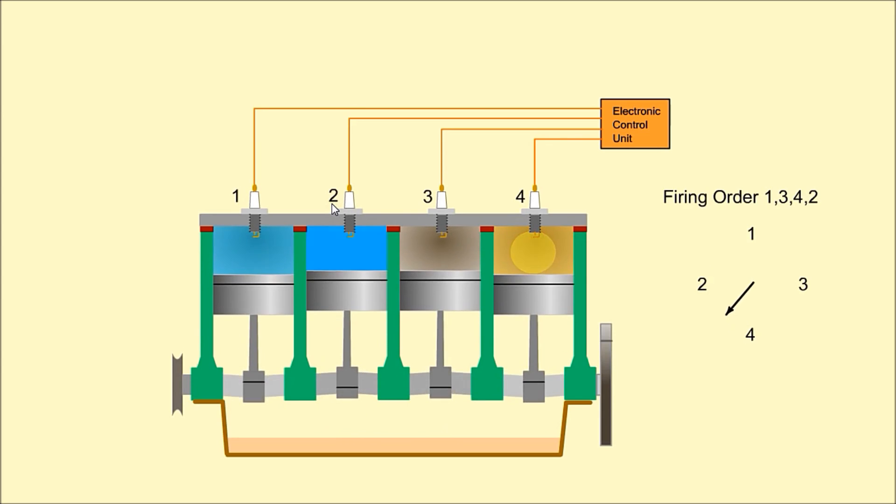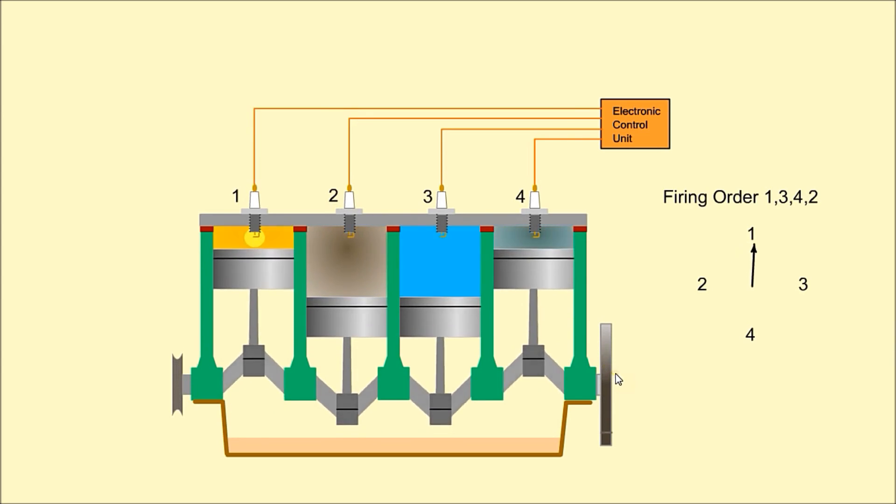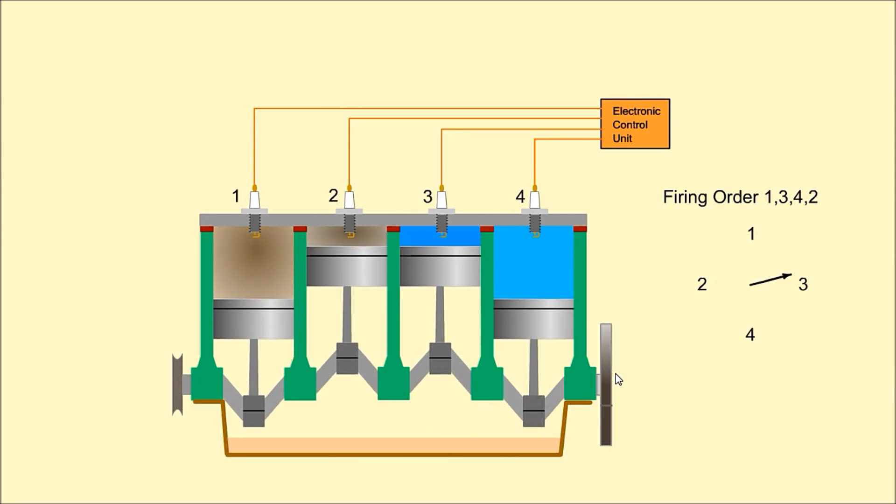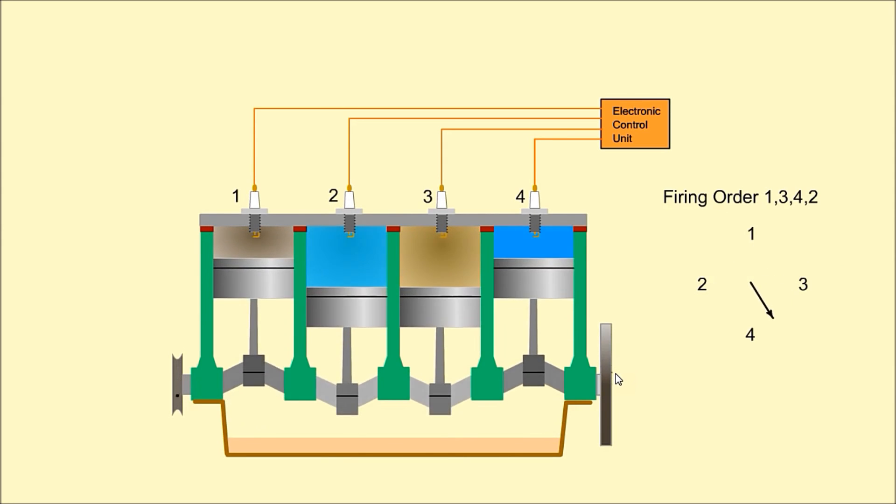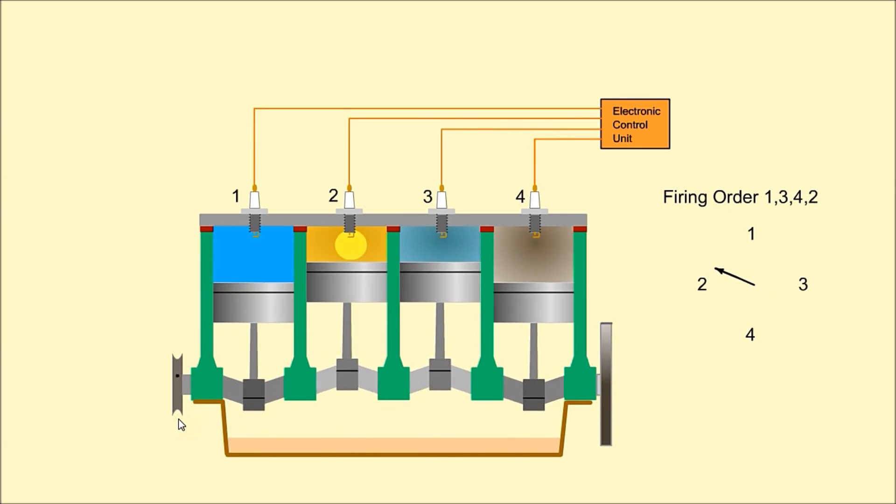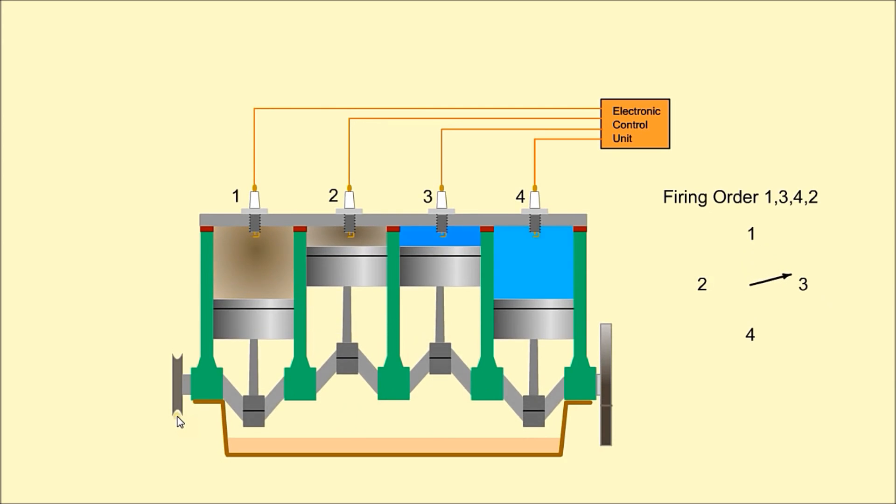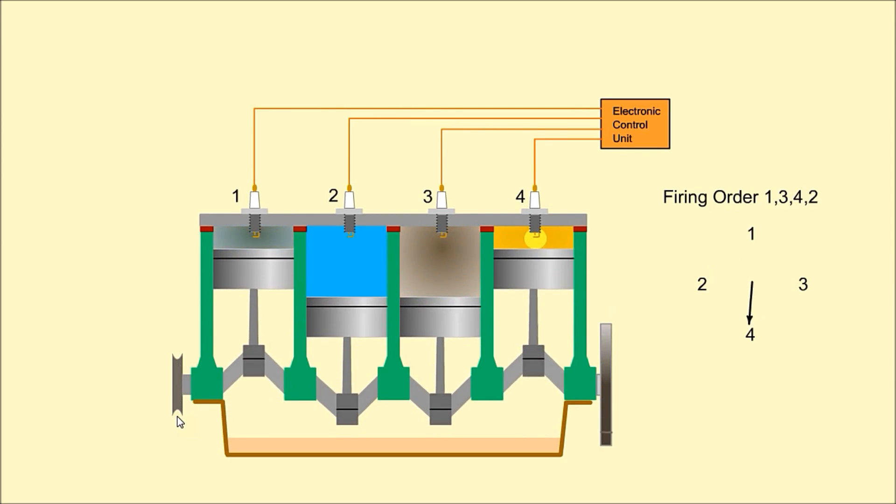A flywheel is attached to the end of the crankshaft to reduce pulsations and vibrations. A pulley is attached to the other end of the crankshaft, which can be used to drive ancillary equipment such as the alternator, water pump, or timing belt.